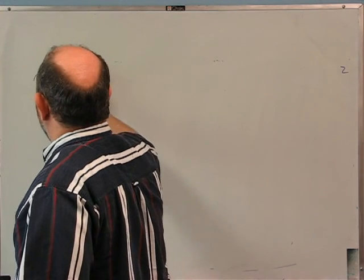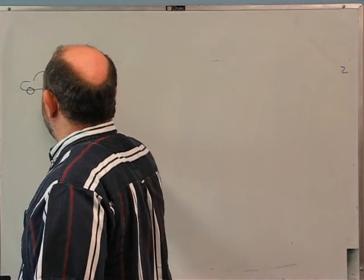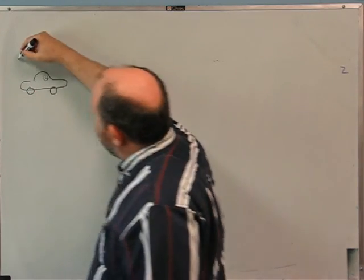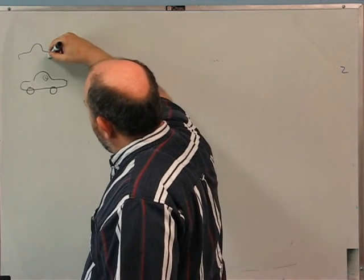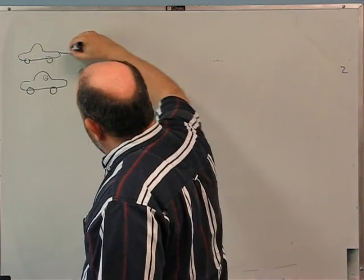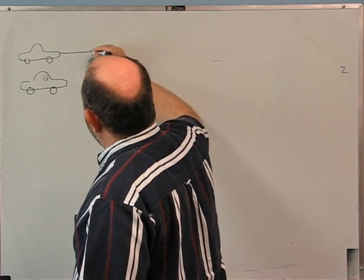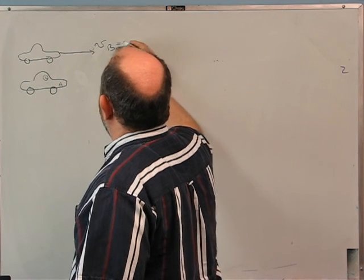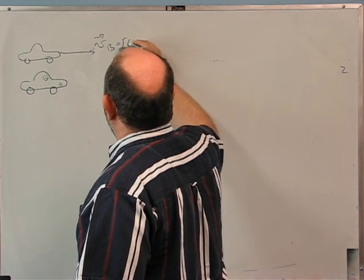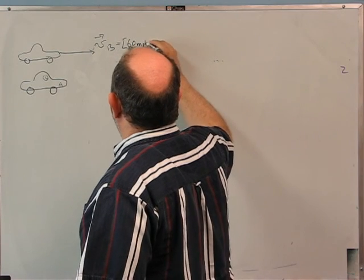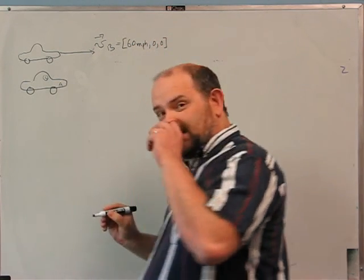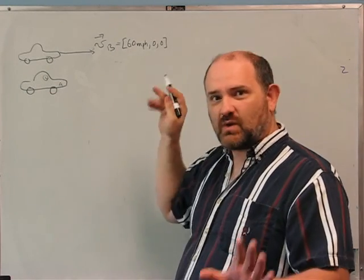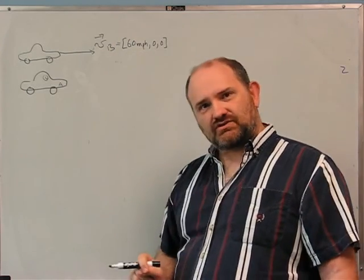Let's set this up with pictures. I'll call myself car A and the passing car B. Car B's velocity is (60 mph, 0, 0). We only need the x components — everything moves in the same direction, nothing moves in y or z.